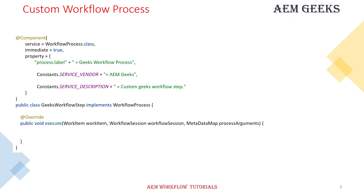You can write a custom workflow process in the same way you write other backend modules. You have to implement an interface called WorkflowProcess, and the same interface works as a service in the @Component annotation. One property is important here: that is process.label. Whatever label you define here will be available inside the dropdown of process step. The other two properties are not mandatory — they are generic ones you can use in any other backend module as well.